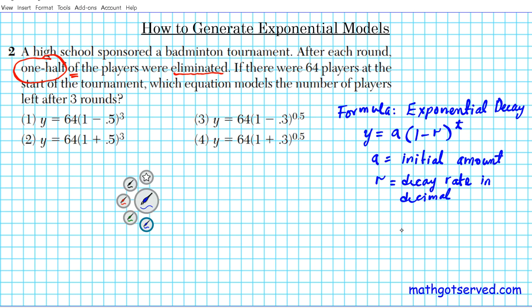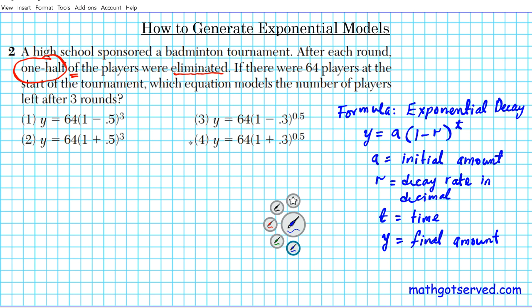Then we have t — t represents the time period for which you want to calculate how much decay happened. And y represents the final amount. Sometimes you have to find your final amount; other times you're just generating a model. In this particular case, we're generating a model — we're setting up a function that can help us find the final amount, but we're not solving all the way.